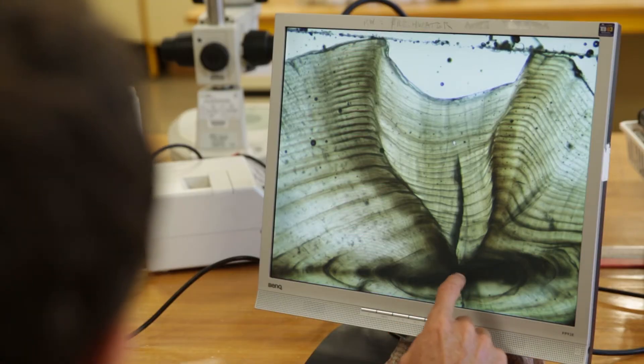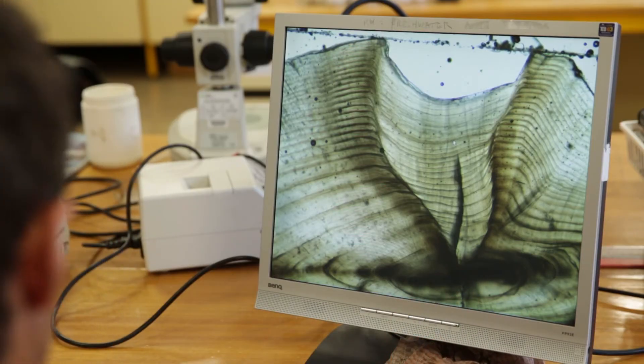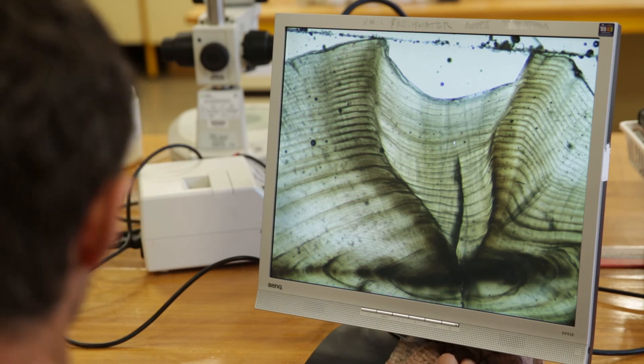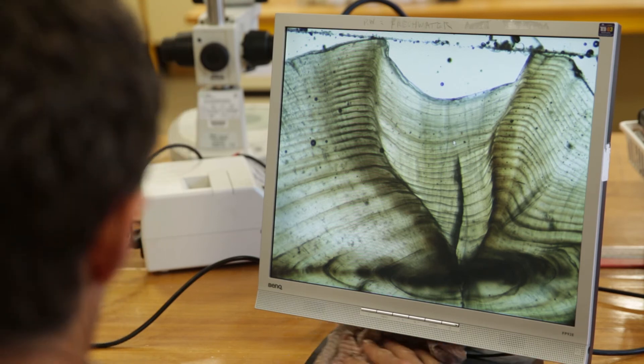The chemical signature at the core of the otolith as well, we can actually work out where a fish was born, and not only where it was born but whether it was produced in a hatchery or whether it was spawned naturally in the wild.